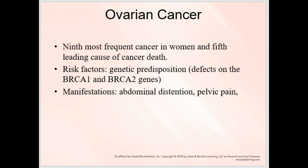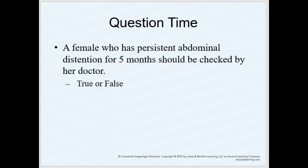Ovarian cancer is the ninth most frequent cancer in women but the fifth leading cause of cancer death — because it's difficult to find and people ignore abdominal distension and pelvic pain until it's progressed. There's a genetic predisposition and an affiliation with defects in the BRCA1 and BRCA2 genes that we also see in breast cancer. It has been a long journey, but here we are at the end of reproductive. A female who has persistent abdominal distension for five months should be checked by her doctor — true or false? Thank you, and I will talk to you in the next video.